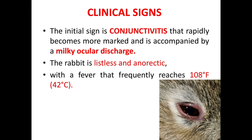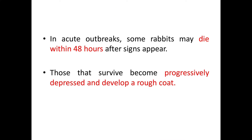Now let's see the clinical signs. The initial sign is conjunctivitis that rapidly becomes more marked and is accompanied by a milky ocular discharge. The rabbit is listless and anorectic with a fever that frequently reaches 108°F or 42°C. In acute outbreaks, some rabbits may die within 48 hours after the signs appear.